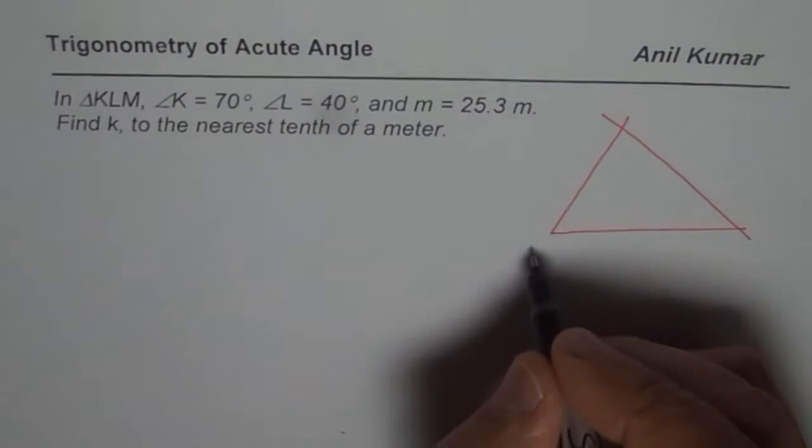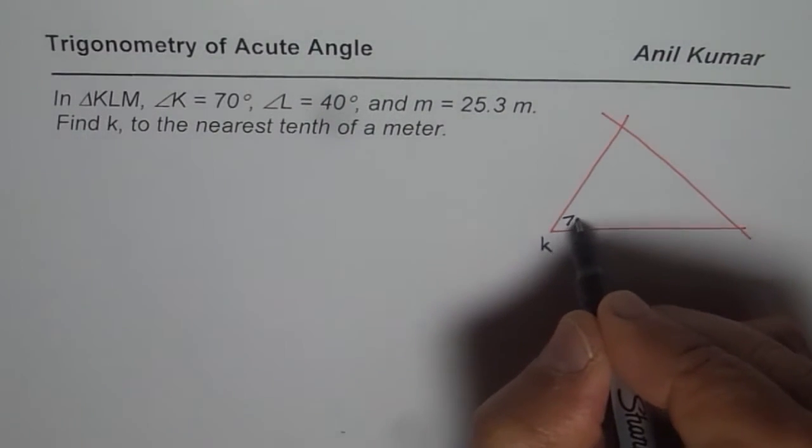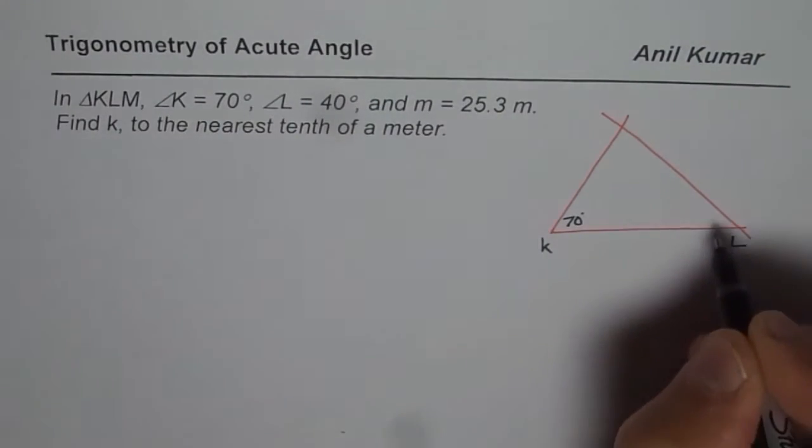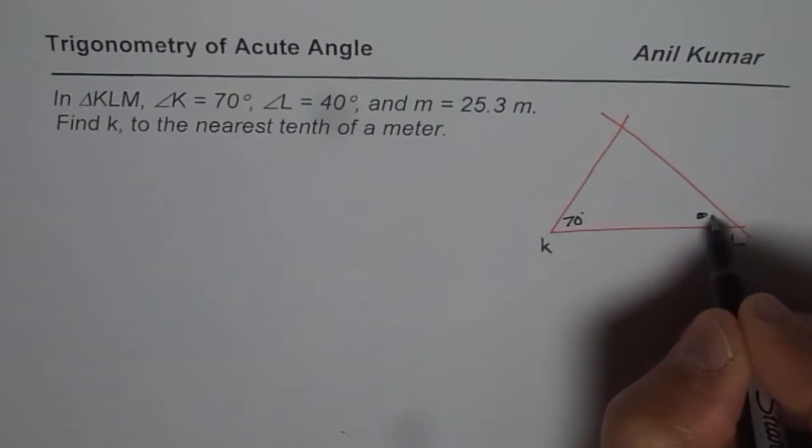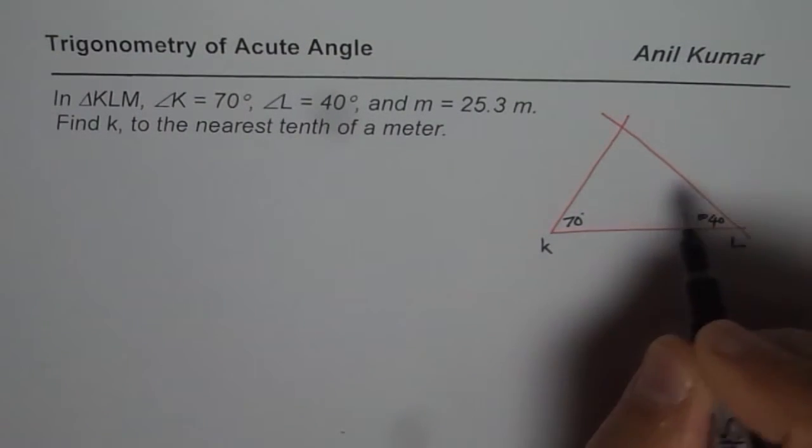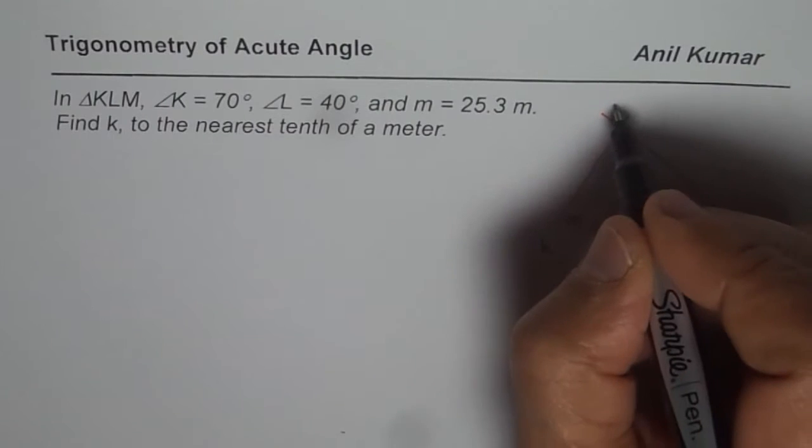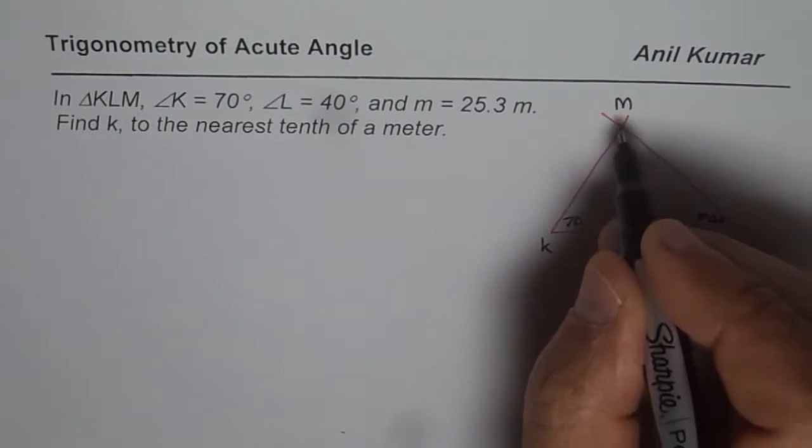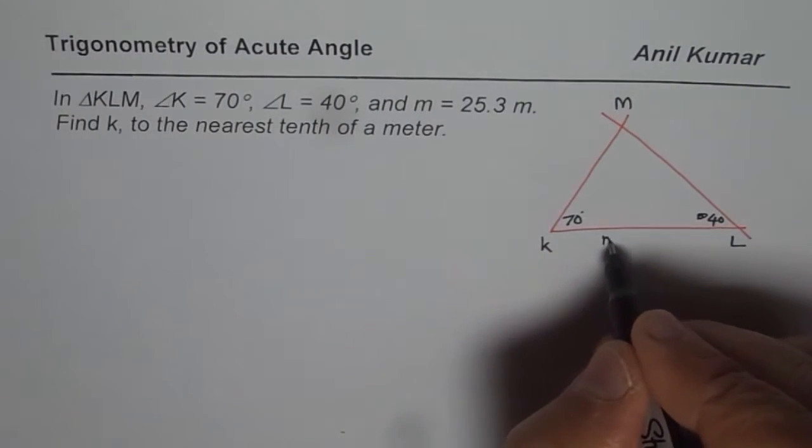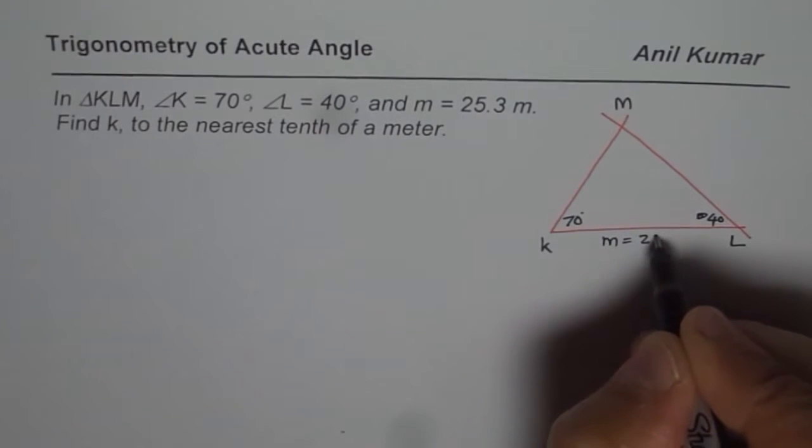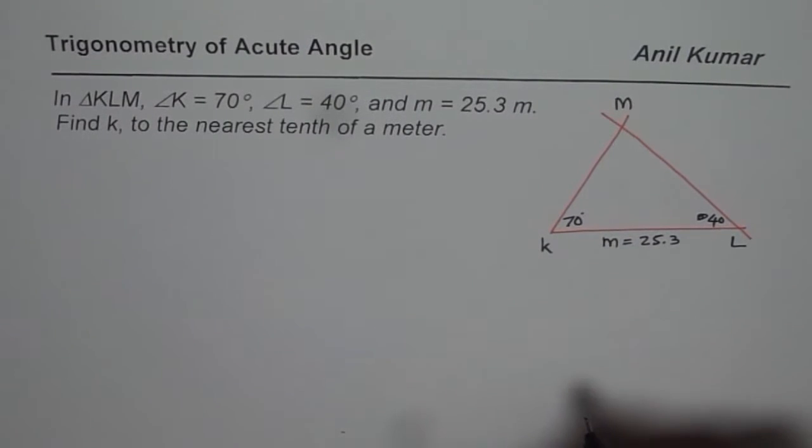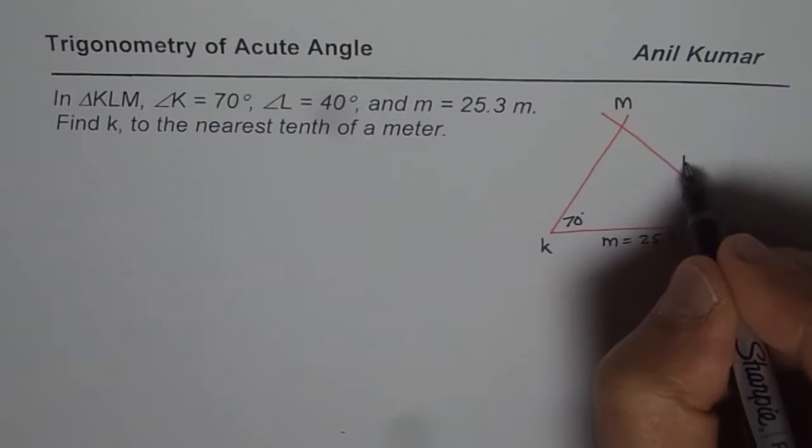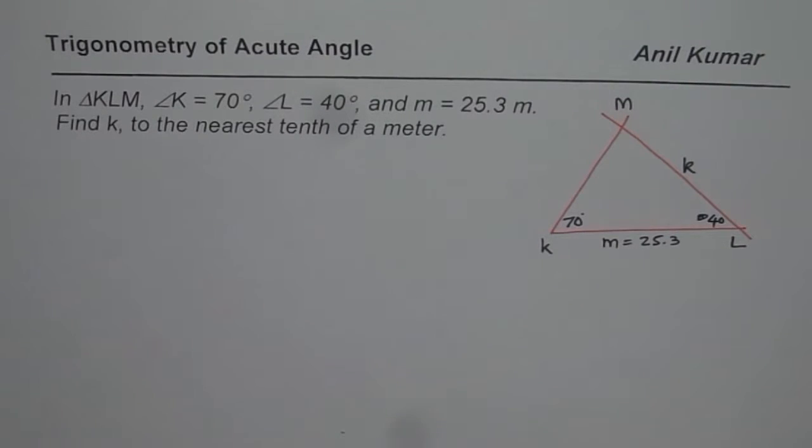So we get K as 70 degrees, L as 40 degrees. And we are also given M, side M. So M is the vertex and side M will be this particular side, which is 25.3. We need to find K, so we need to find that side. That is how we can see our triangle.